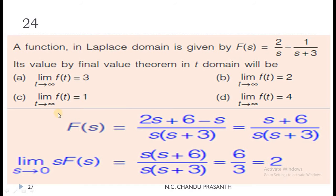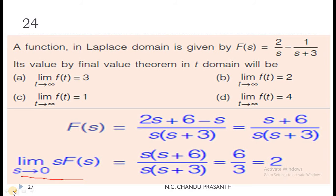Question 24: A function in the Laplace domain is F(S) = 2/S − 1/(S+3). Its value by the final value theorem in the T-domain will be. The final value theorem states: limit as S → 0 of S·F(S). The initial value theorem uses limit as S → ∞ of S·F(S). Combining the fractions: F(S) = (S+6) / [S(S+3)]. Multiplying by S and applying the limit S → 0, we get the answer 2. So limit S→0 of S·F(S) = limit T→∞ of F(T) = 2. Option B is the correct answer.